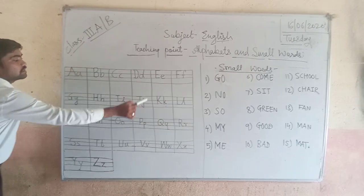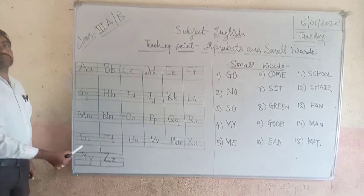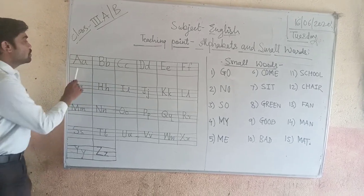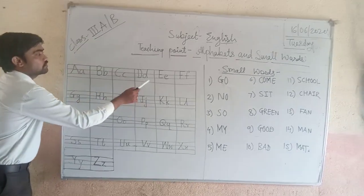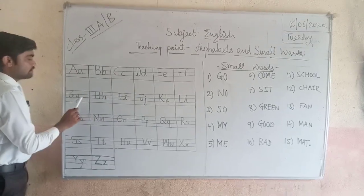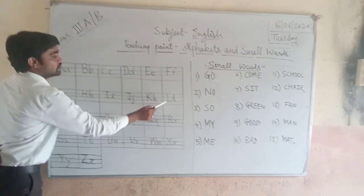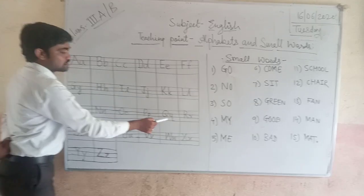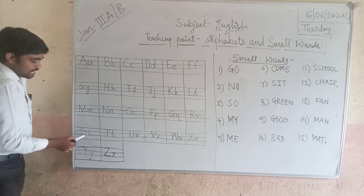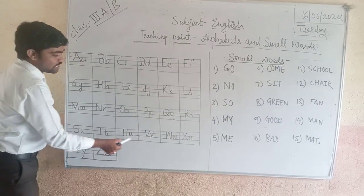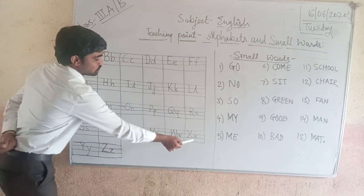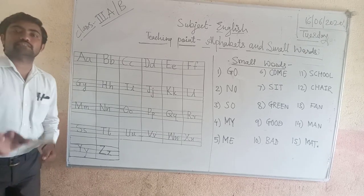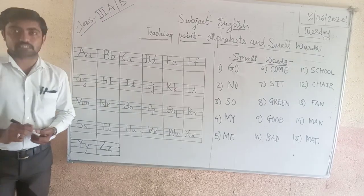These are the alphabets in English subject — capital and small letters. How many letters are there? You can count: 1, 2, 3, 4, 5, 6, 7, 8, 9, 10, 11, 12, 13, 14, 15, 16, 17, 18, 19, 20, 21, 22, 23, 24, 25 and 26. There are 26 letters in English subject.